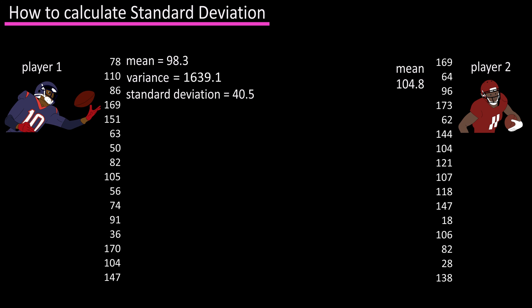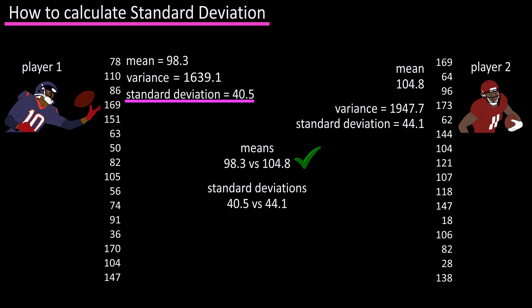Getting back to our example, wide receiver one has a standard deviation of 40.5, but by itself it doesn't tell us much. So we can do the same for wide receiver two, do our magic mathematical calculations, and we get a standard deviation of 44.1. So wide receiver two has a higher mean, he averages more yards per game, but he also has a higher standard deviation, meaning his numbers are not as consistent around his average as wide receiver one, who has a lower standard deviation.